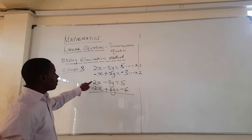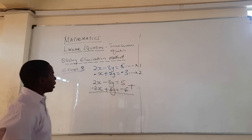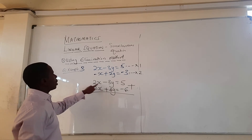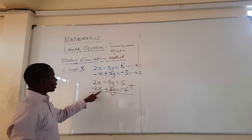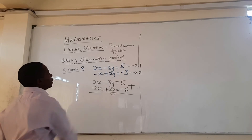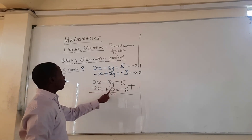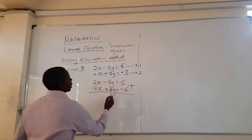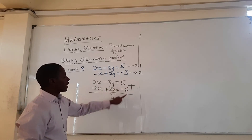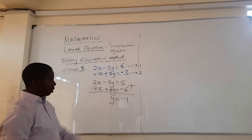The signs are different — one is plus, one is minus. When signs are different, we add the two equations. So 2x plus minus 2x is zero — x is eliminated. Then minus 3y plus 4y equals y. And 5 plus minus 6 equals minus 1. So y equals minus 1.